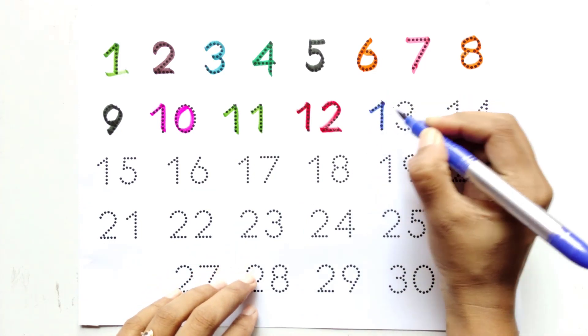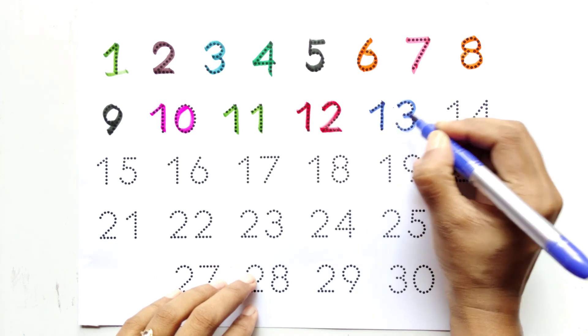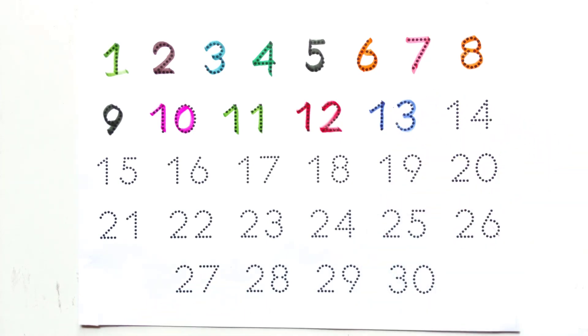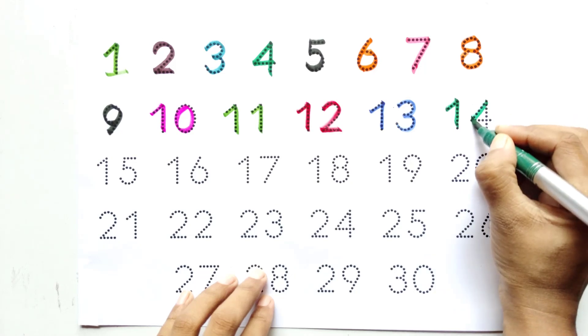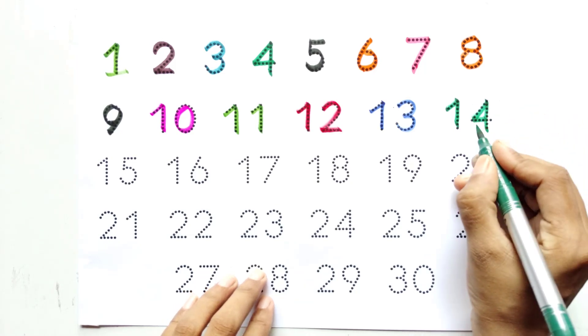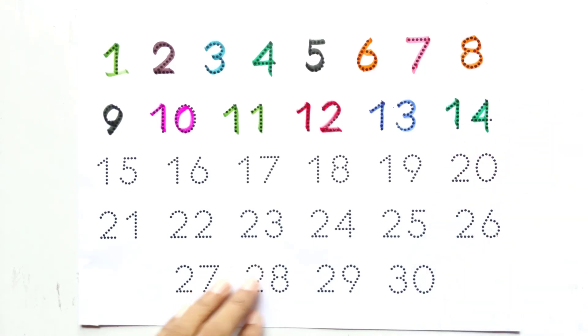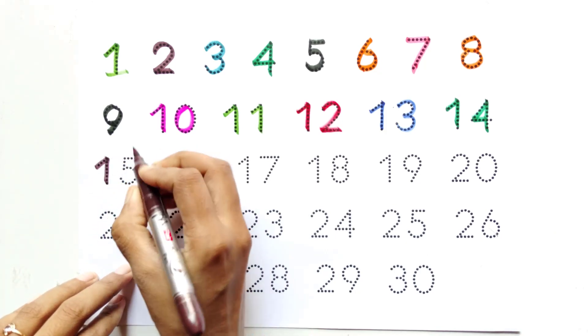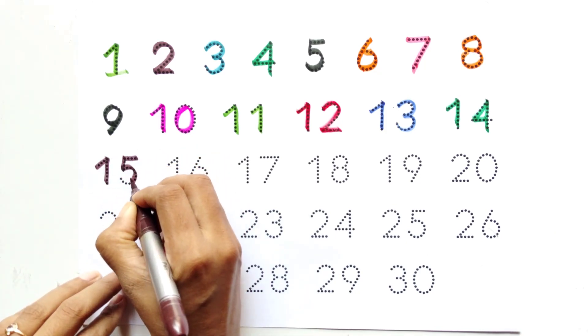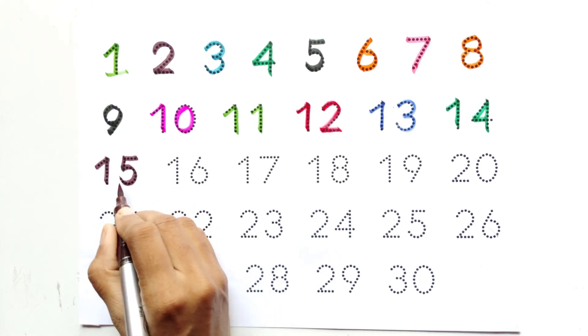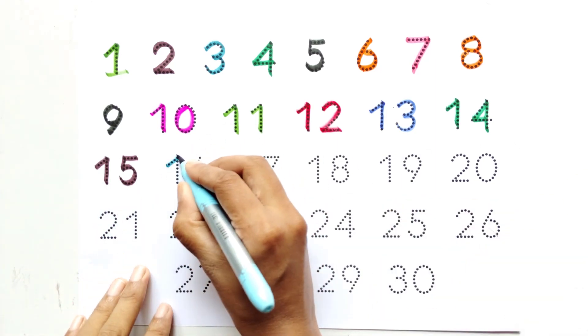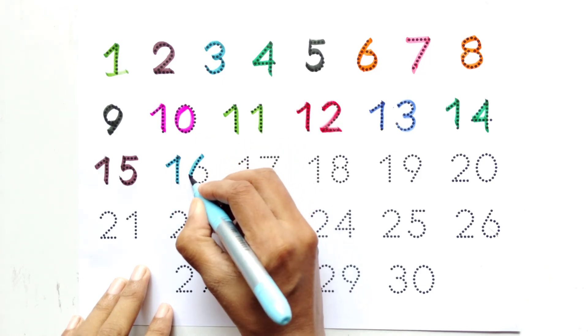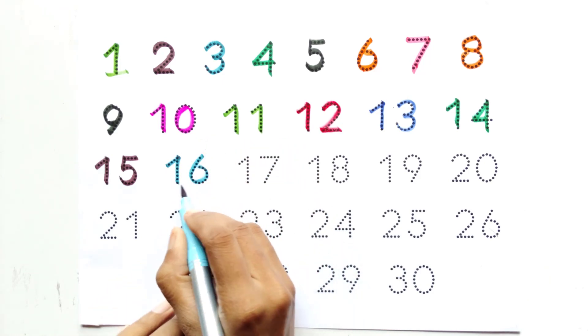One and three, thirteen. One and four, fourteen. One and five, fifteen.